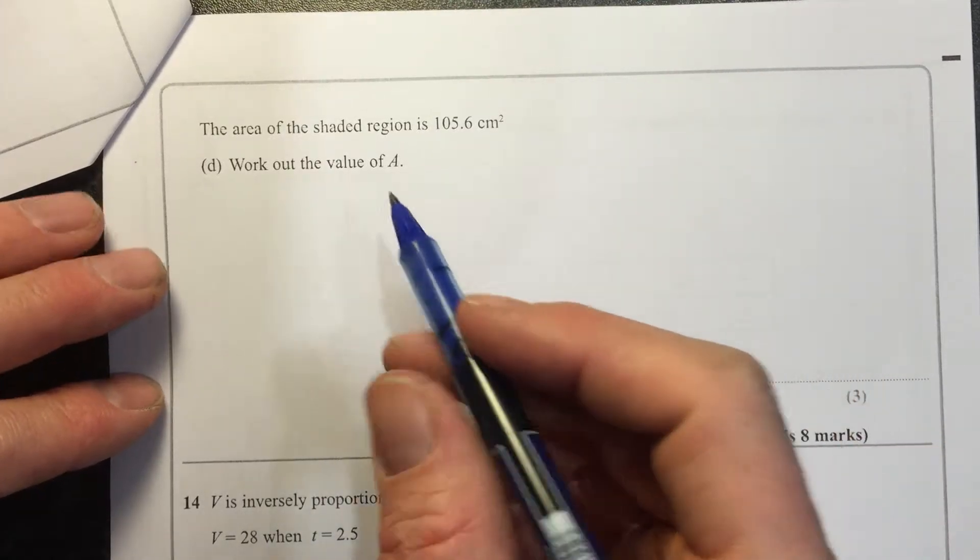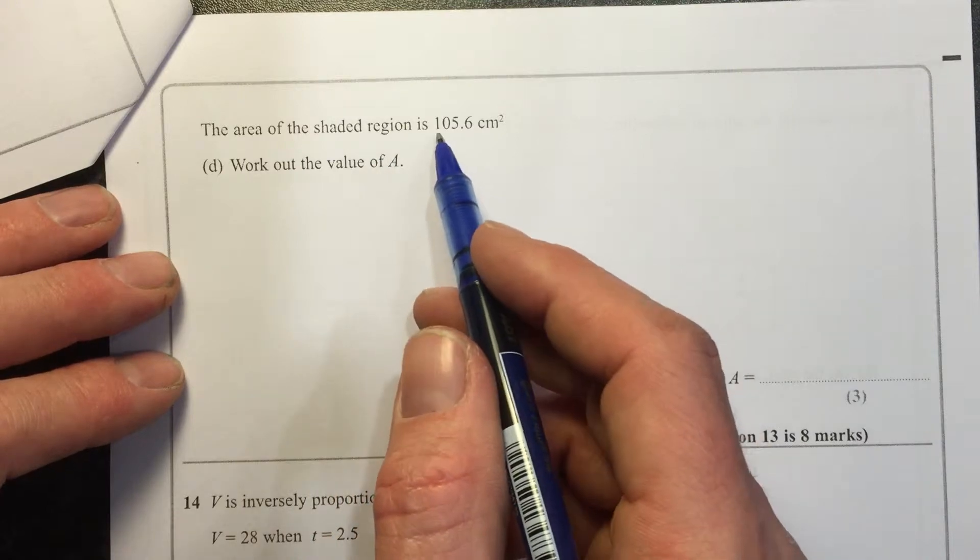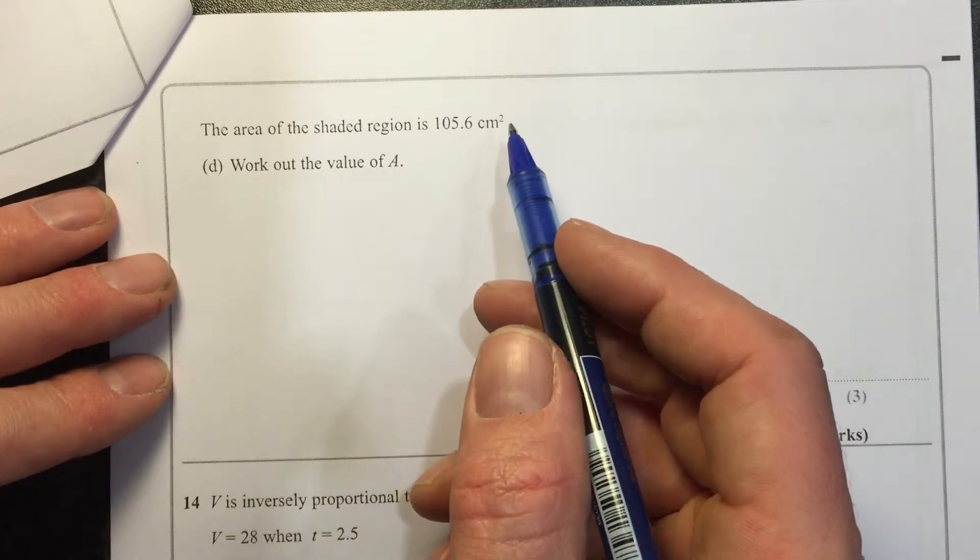Sorry, part D, work out the value of A. The area of the shaded region is 105.6 centimeters squared.